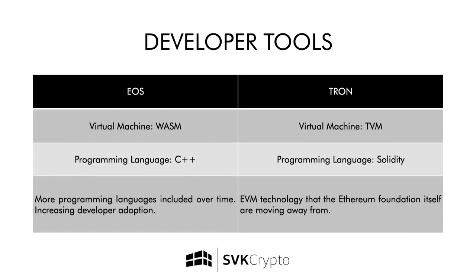Moving on to developer tools. Developers are one of the most important stakeholders in any smart contracting platform — they'll ultimately be the ones that deliver the killer applications of the future. Tron borrowed from Ethereum and uses the Ethereum Virtual Machine, which is programmed in Solidity, a variant of JavaScript. This is a less-supported, legacy language — we even see the Ethereum Foundation themselves moving away from EVM technology to something more modern, like what EOS is using: WebAssembly. WebAssembly can be compiled from many different languages. EOS supports C++ from the beginning, enticing the many programmers who already know C++ to build decentralized applications on the EOS network.